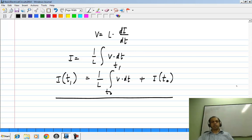That means that the difference in currents at time t1 and time t0 is given by the integral of the voltage, the area under the voltage curve divided by the inductance of the inductor. This again is analogous to the relationship we saw earlier with the capacitor.